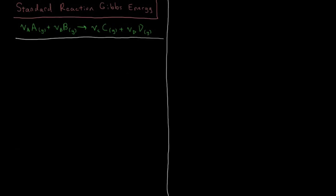In this video, we're going to look more at the standard reaction Gibbs energy and see how we can calculate that from the Gibbs energy of formation of our chemical species within our reaction. The reaction we're going to use is our favorite reaction throughout this series on chemical equilibrium, which is nu_A moles of A plus nu_B moles of B — stoichiometric coefficients are nu's and the chemical species are each capital letter — going to products of nu_C moles of C and nu_D moles of D.